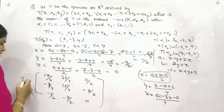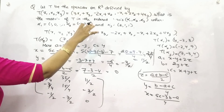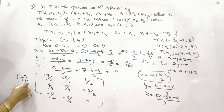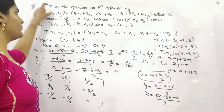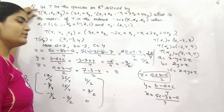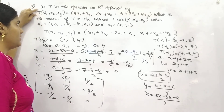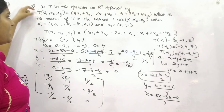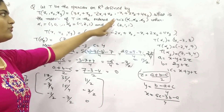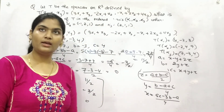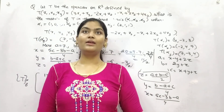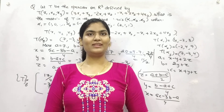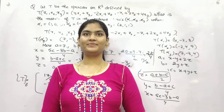So this is your final matrix for the ordered basis. In this way, you can transform a particular operator in 3-dimension or 2-dimension and convert it with the help of your given basis. I hope you understand this. Don't forget to like, share, and subscribe to my channel. Till my next video, take care. Bye-bye.